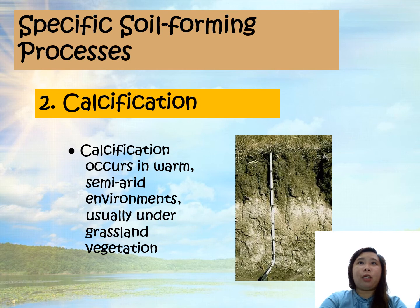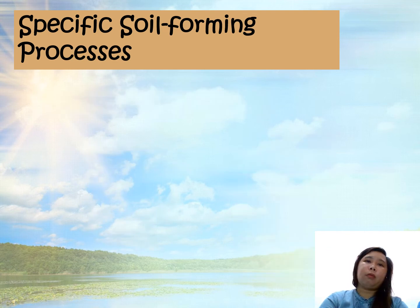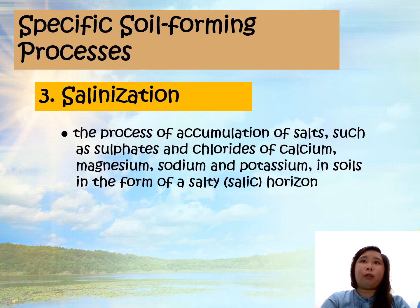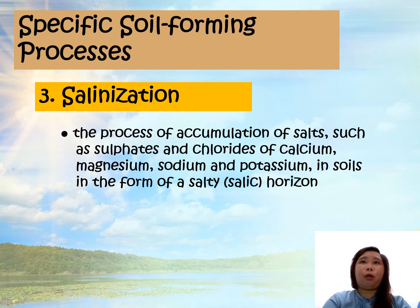You can notice the whitish color of the B horizon — that is the product of calcification. We also have what we call salinization. It is the process of accumulation of salts, such as sulfates and chlorides of calcium, magnesium, and sodium.